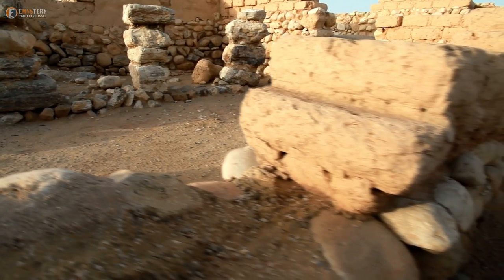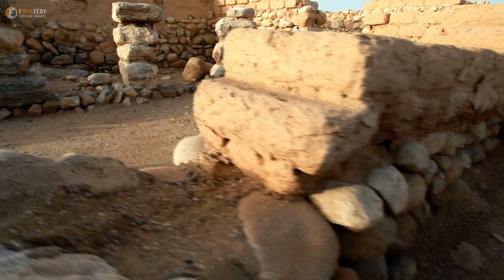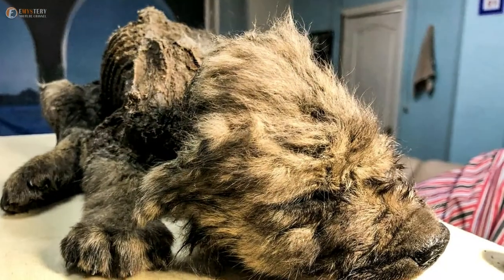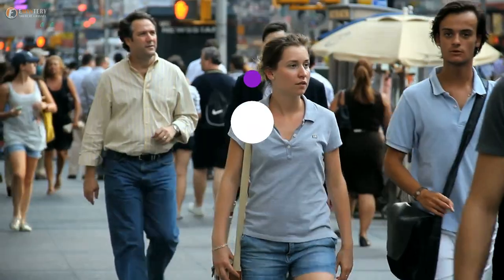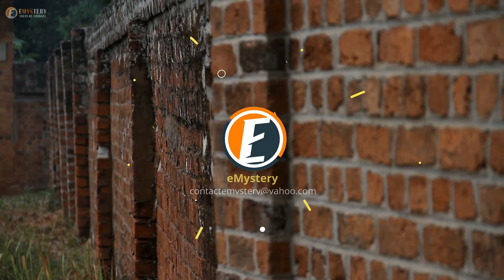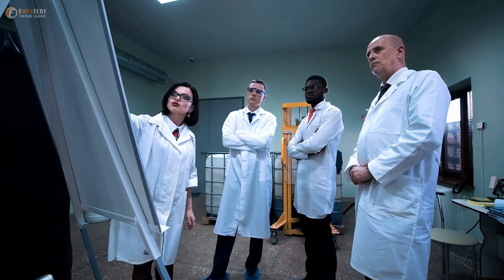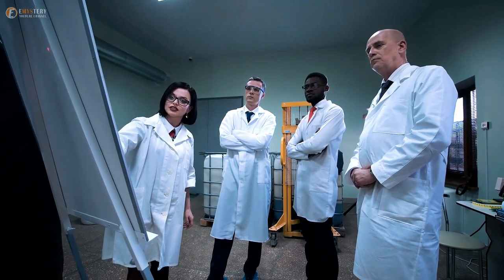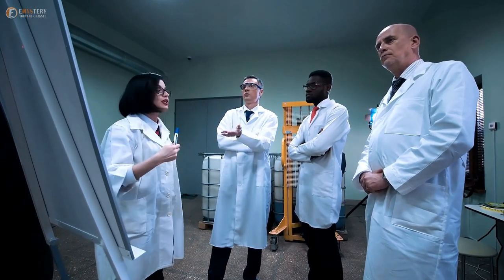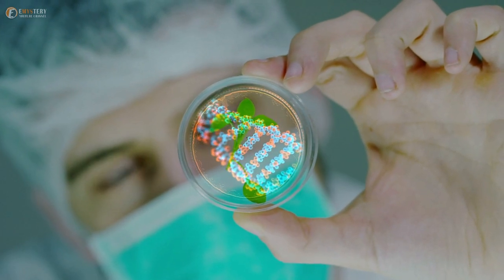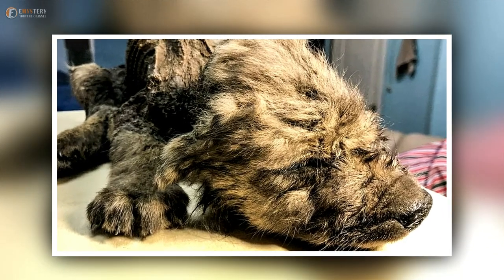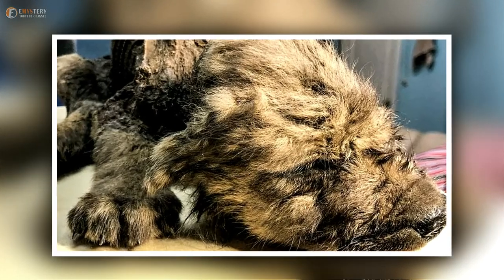Scientists find perfectly intact 18,000-year-old dog in permafrost, but experts think it may be a wolf. Scientists in Russia were shocked last year after the discovery of a furry little puppy that was buried beneath frozen mud for a whopping 18,000 years, bringing us face-to-face with prehistoric animal life. But what can his death tell us about the dogs we have as pets today?